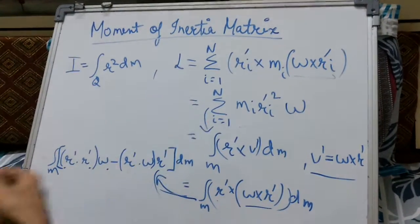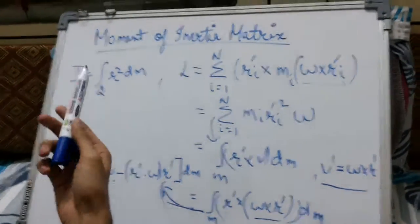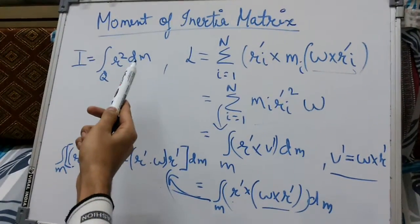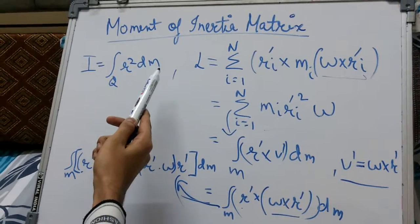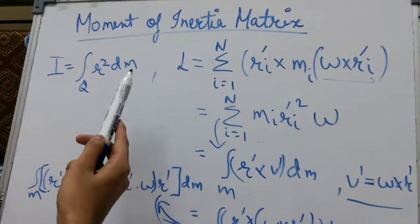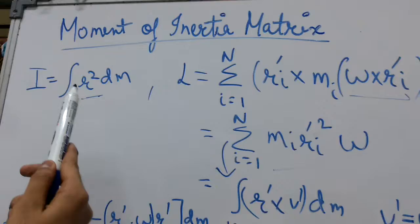I am going to discuss the moment of inertia matrix. First of all, what is moment of inertia? Moment of inertia can be defined as an integral of r squared dm, where it depends on the body's mass distribution and on the axis chosen. Here r is the distance of the body from the axis.